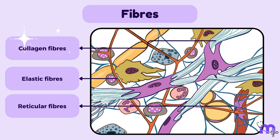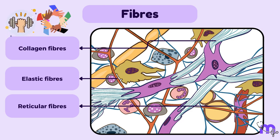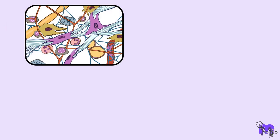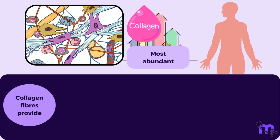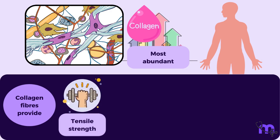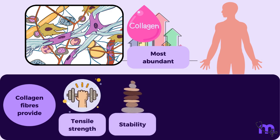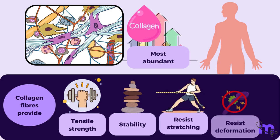Collagen fibers are the most abundant fibers in the extracellular matrix and provide strength and support to the tissue. They are composed of the protein collagen, which is the most abundant protein in the human body. Collagen fibers provide tensile strength and stability to tissues, allowing them to resist stretching and deformation.